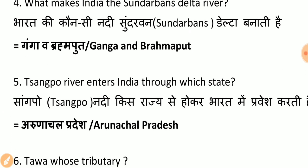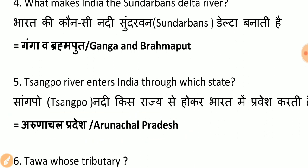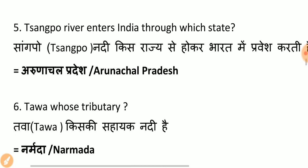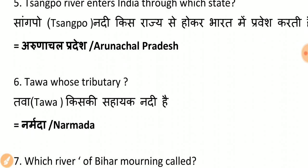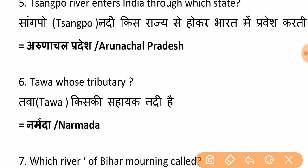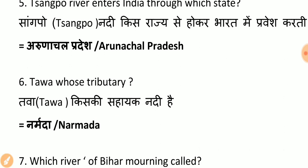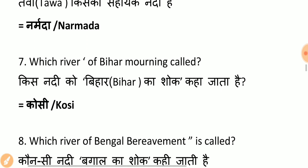Sangpo river enters India through which state? Sangpo is a river. Tawa — remember that Tawa is a tributary of the Narmada river. Moving to the next question.